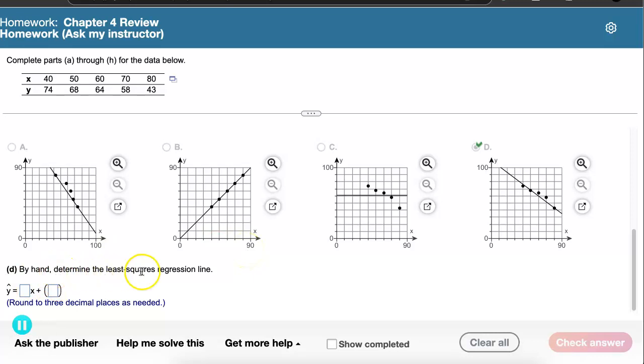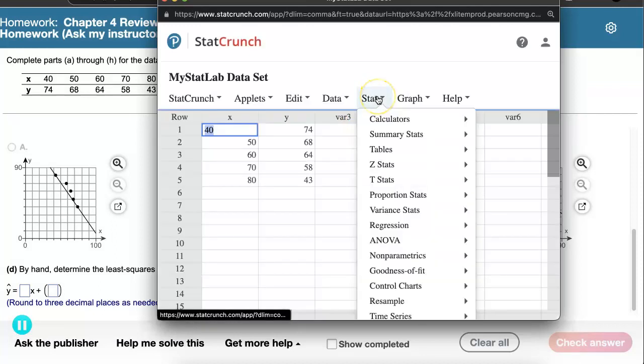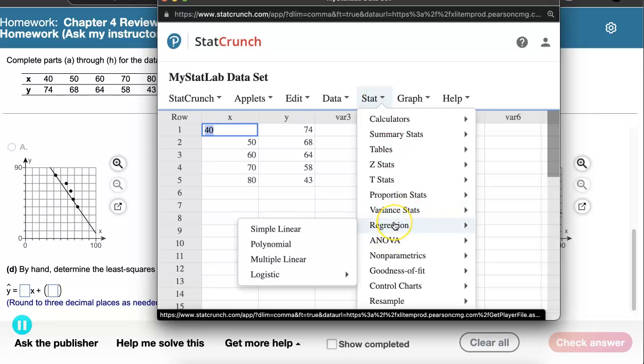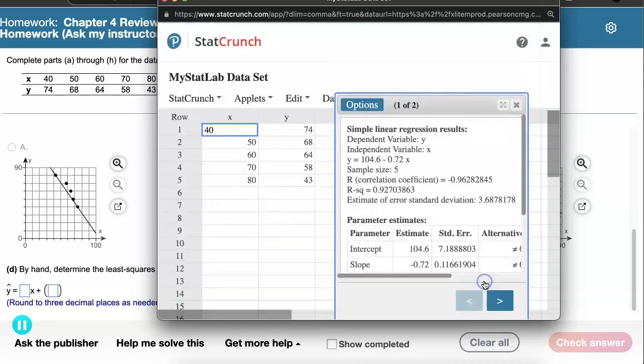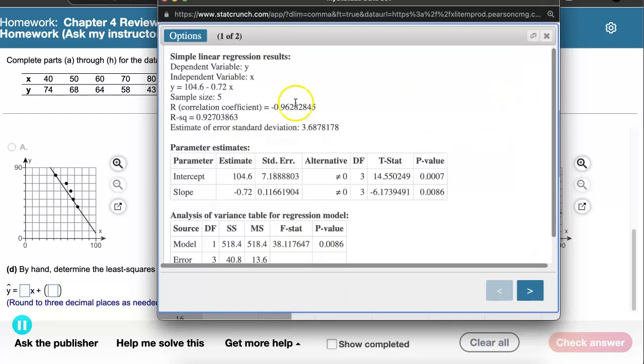Next, it says here by hand determine the least squares regression line. But I want to show you in StatCrunch only because anytime that we can use technology to speed up our processes, we're going to do so. So I open up the data in StatCrunch. I go to regression, stat regression, simple linear. We'll select x and y and compute. This simple linear regression is going to be noted here in our output that we receive from StatCrunch. Just note that the order of those two terms is different than the order that we're going to write it here inside of my math lab. They give us the y-intercept first, and then they give us the term that's the slope times the independent variable.